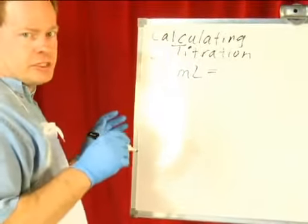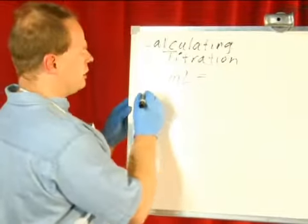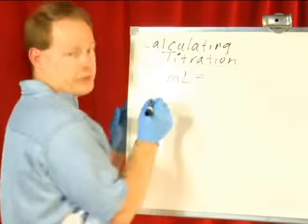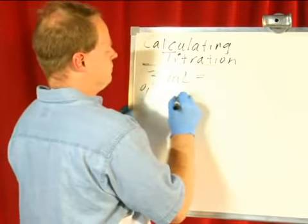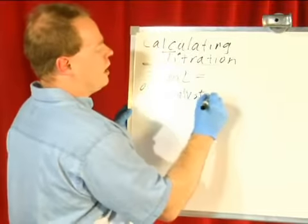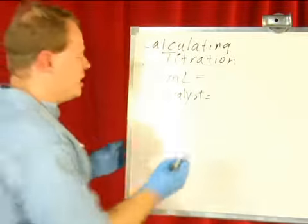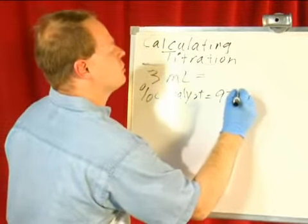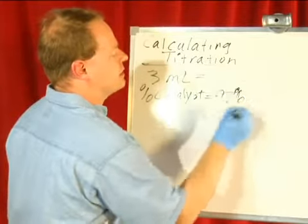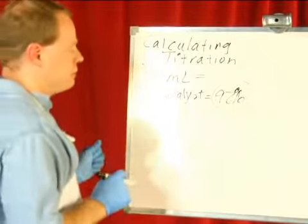To calculate your solution or your titration, you're going to need to know the purity of your catalyst. I know mine is 92% pure, so my potassium hydroxide is 92% pure catalyst.